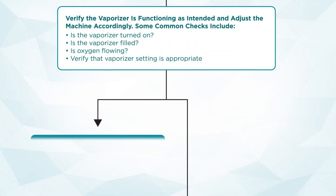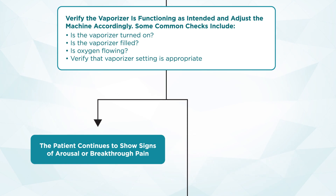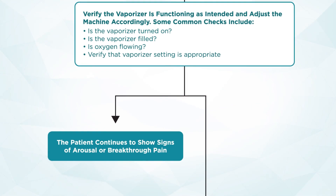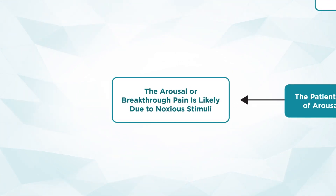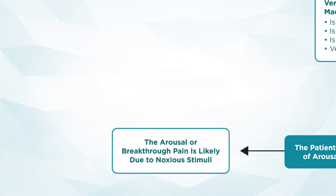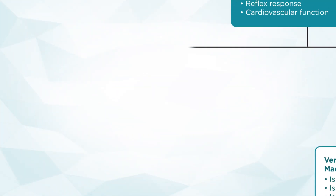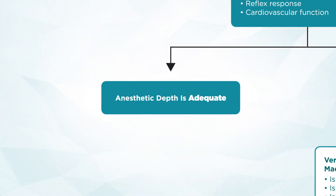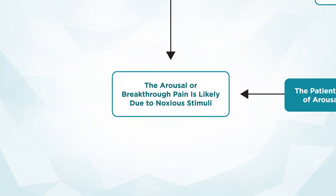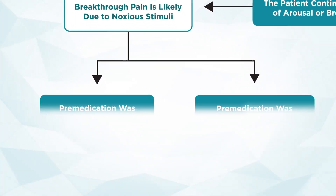If the patient continues to show signs of arousal or breakthrough pain, we're going to want to see whether or not that arousal or breakthrough pain may be due to noxious stimuli. If anesthetic depth seems adequate, we are concerned that there is either arousal or breakthrough pain likely due to noxious stimuli and we want to intervene.